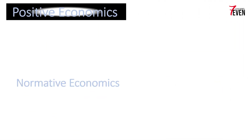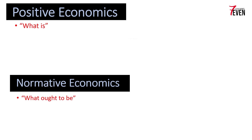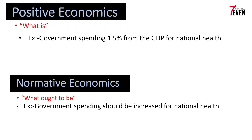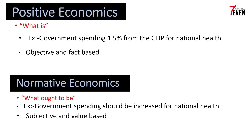There are also two branches of economics: positive economics and normative economics. Positive economics concerns what is, but normative economics concerns what ought to be. An example of a positive economic statement: the government spends only 1.5 percent of GDP on national health. An example of a normative economic statement: government spending should be increased for national health.